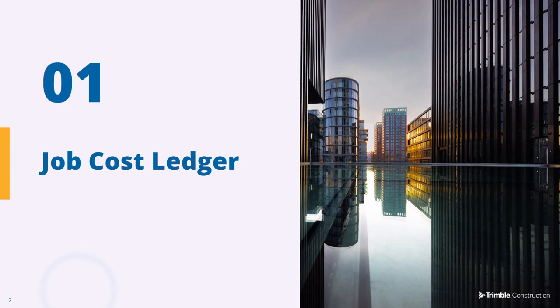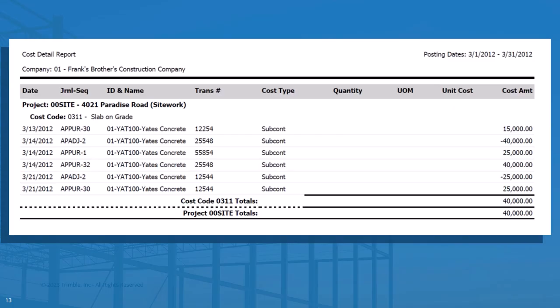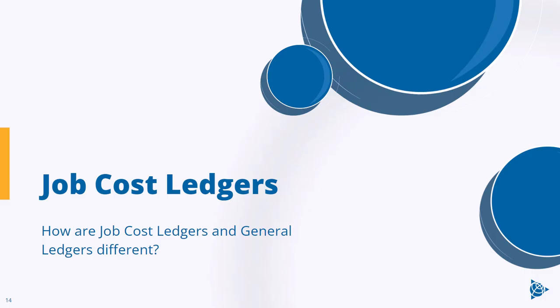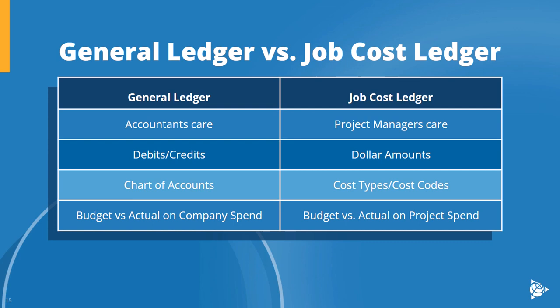Construction businesses need what is called a job cost ledger. This job cost ledger provides a detailed record that tracks and organizes all the costs associated with and charged against a specific construction project. The general ledger, by contrast, is something that accountants really care about — any time an accounting transaction is recorded in the system, it hits the general ledger. This could be a payroll check, an accounts payable invoice, or a credit card receipt. All accounting transactions hit the general ledger; it is where all financial transactions of a business are recorded.